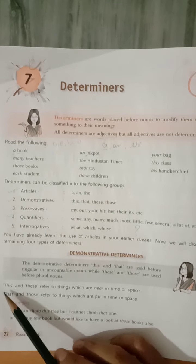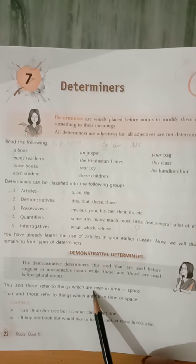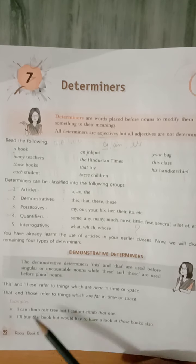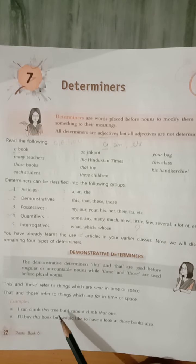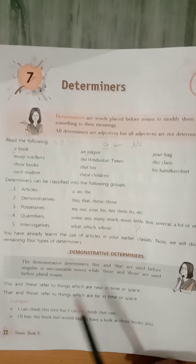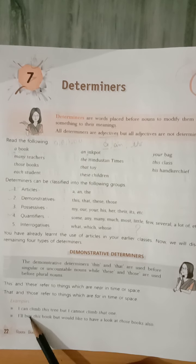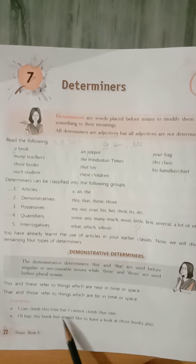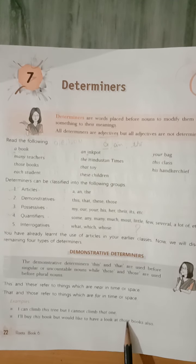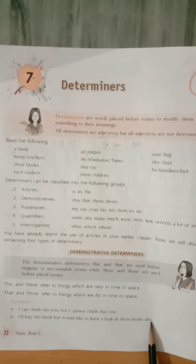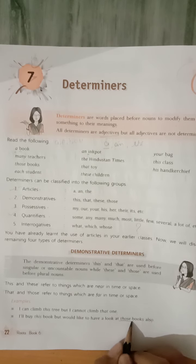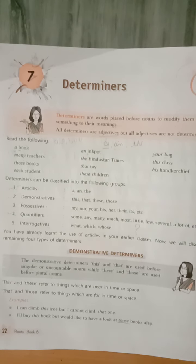'This' and 'these' refer to things which are near in place or time. Examples: 'I can climb this tree, but I cannot climb that one.' 'I'll buy this book but would like to have a look at those books.' You can use 'those' in the same way.